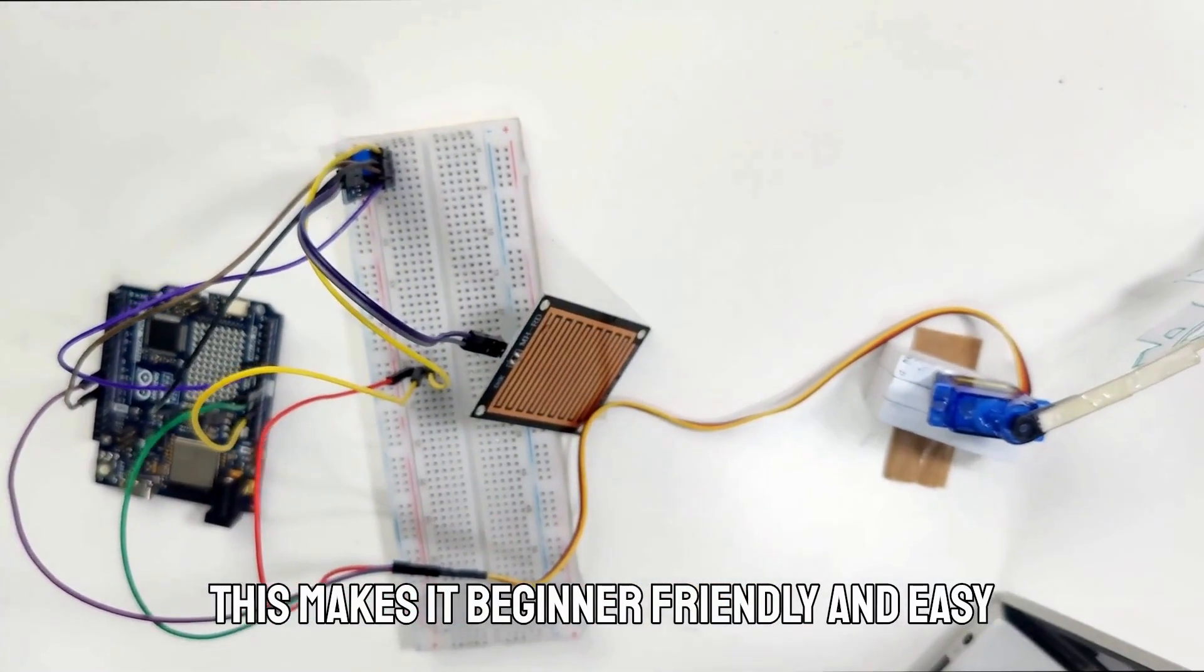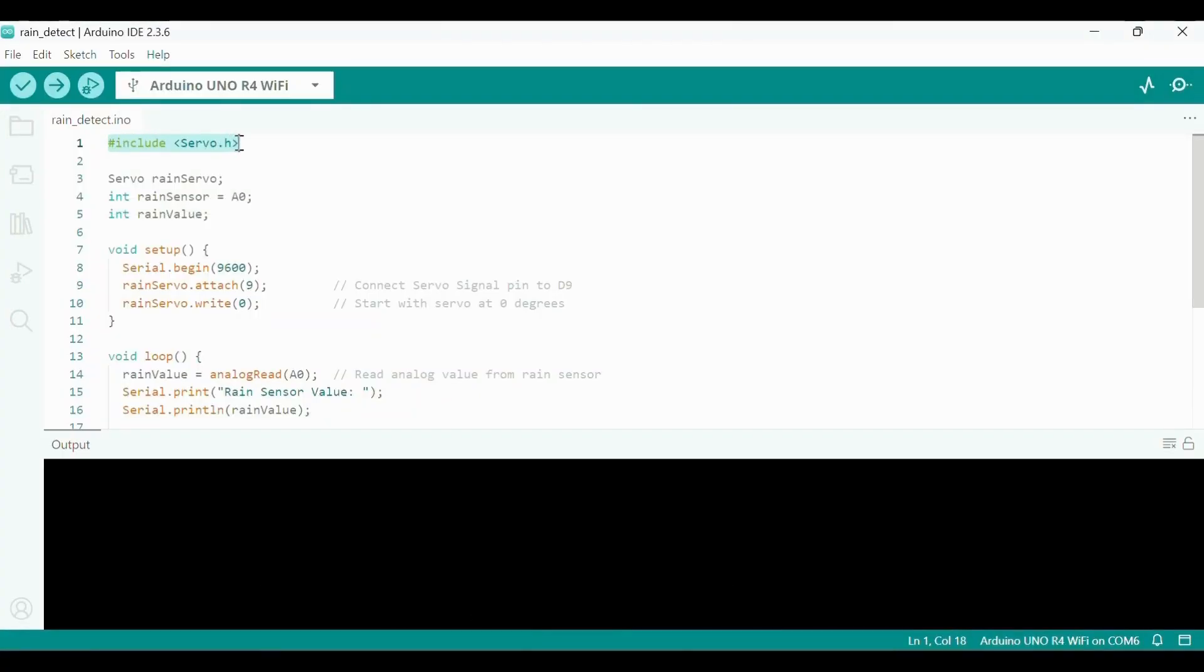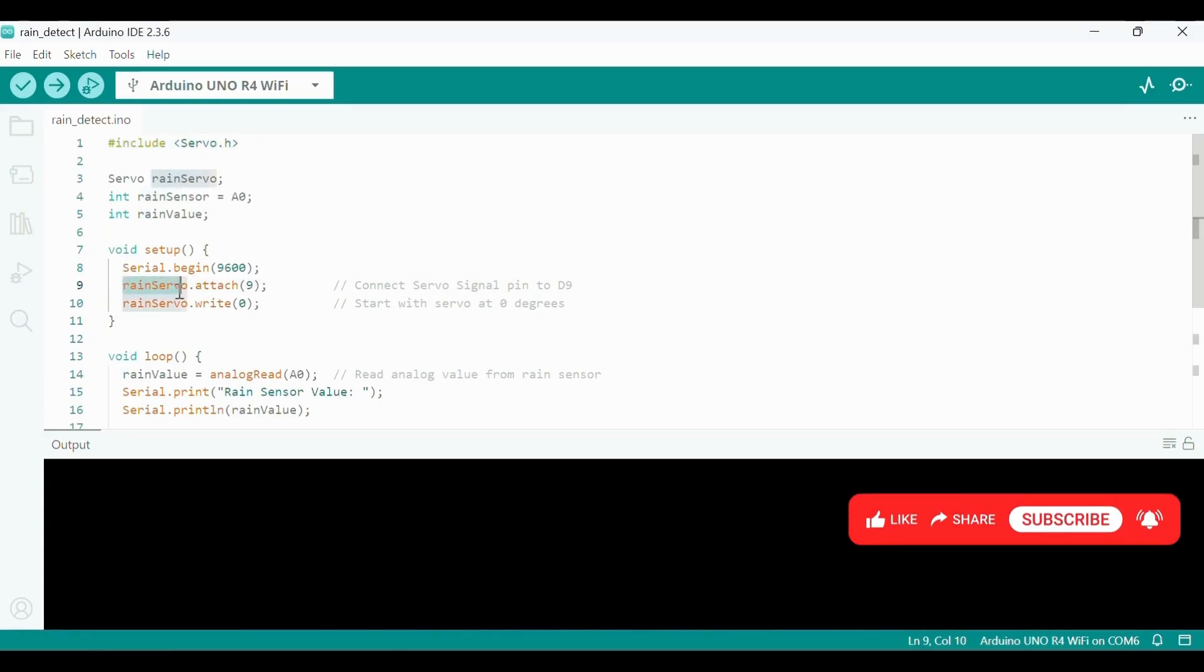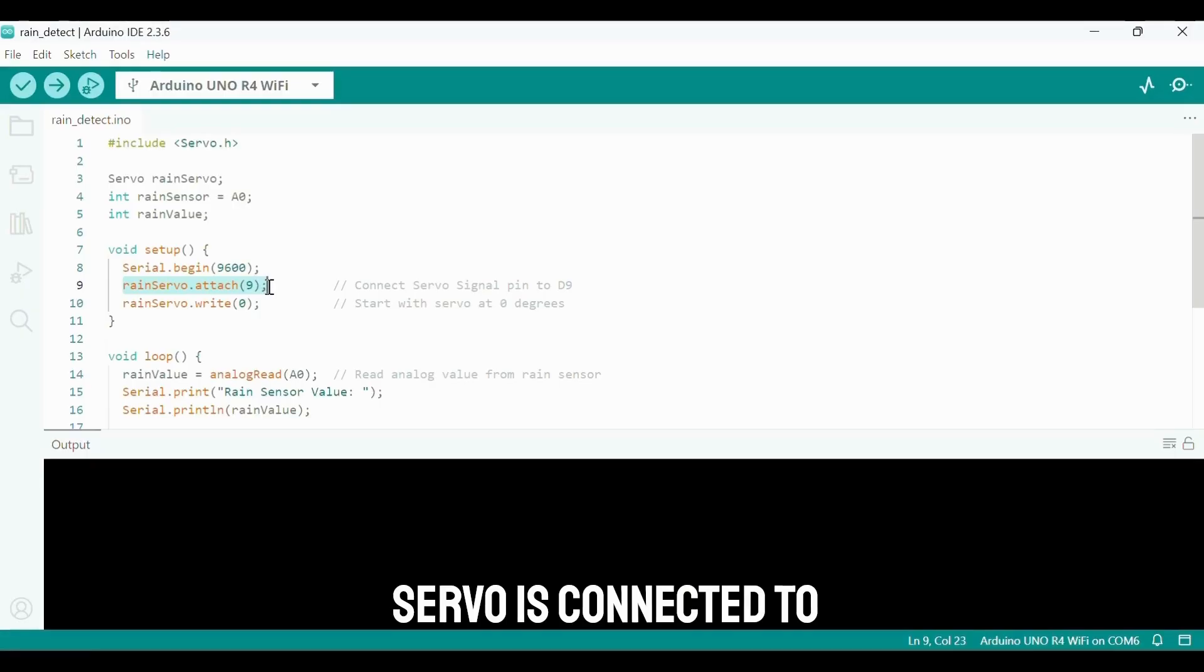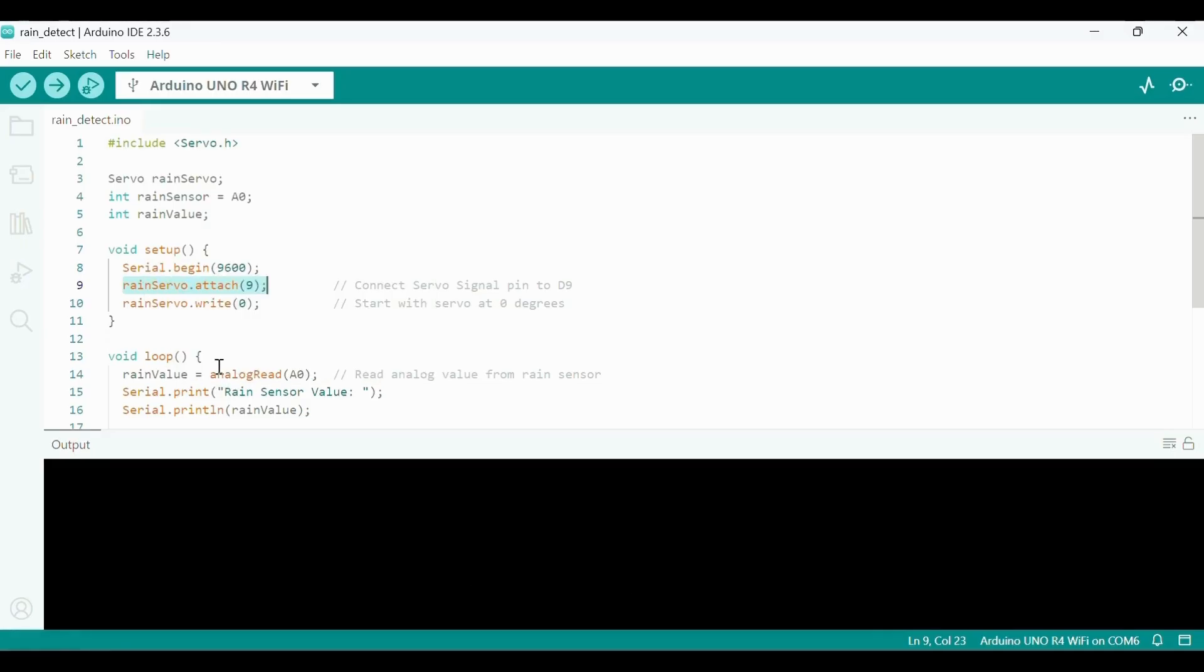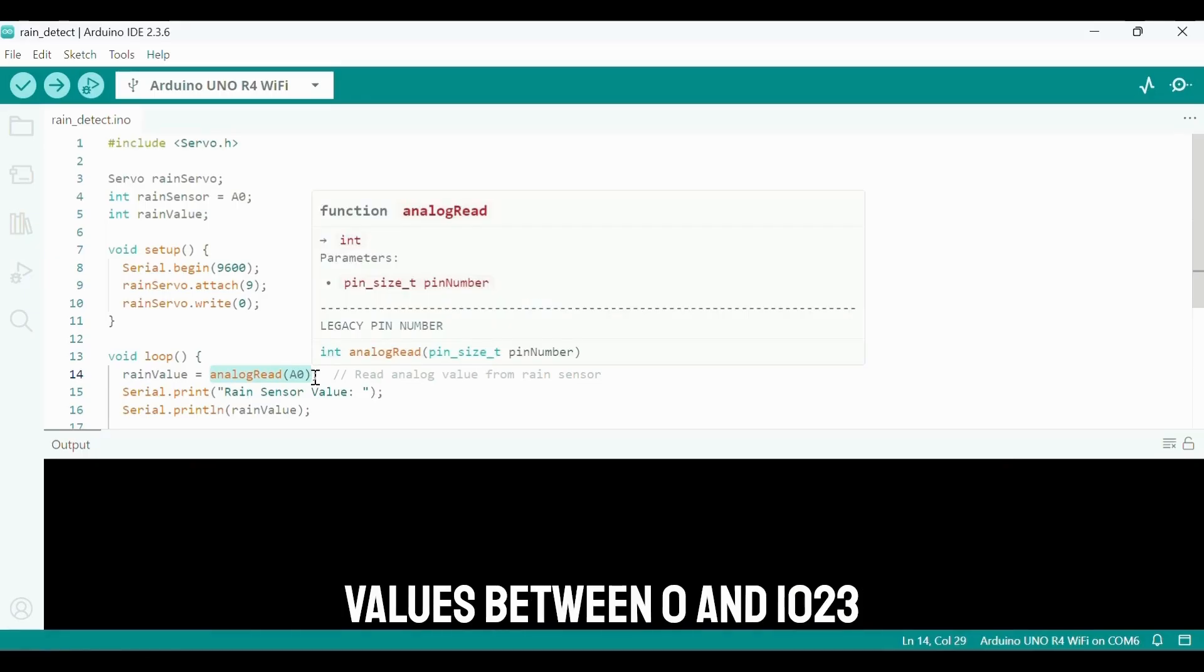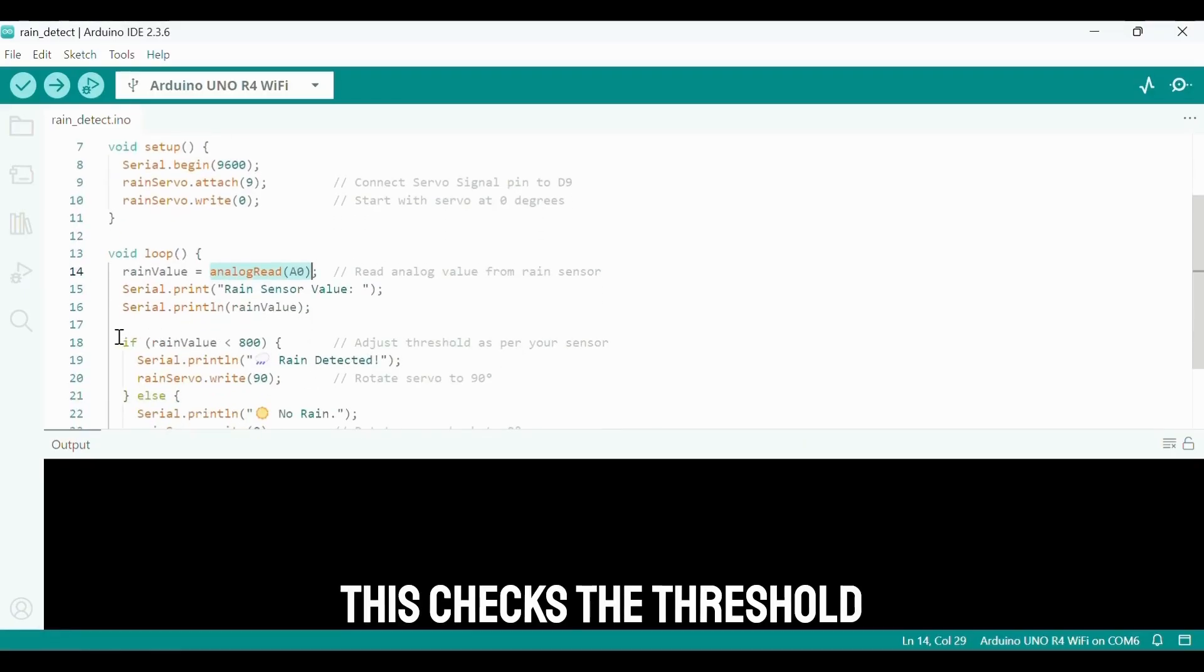#include servo.h is a library installed for controlling the servo motor easily. rainservo.attach of 9 tells the Arduino that the servo is connected to pin 9. analogRead of A0 reads the sensor module's analog signals by giving values between 0 and 1023. This checks the threshold value.